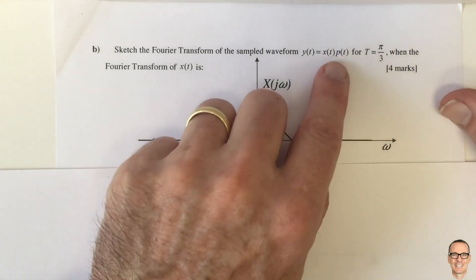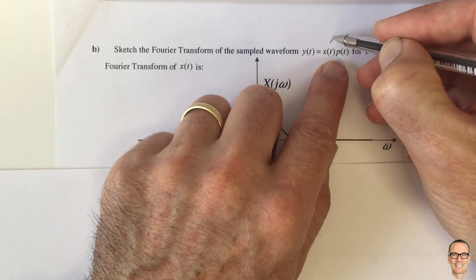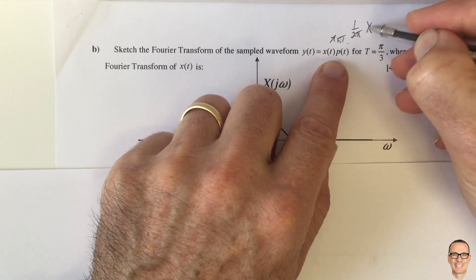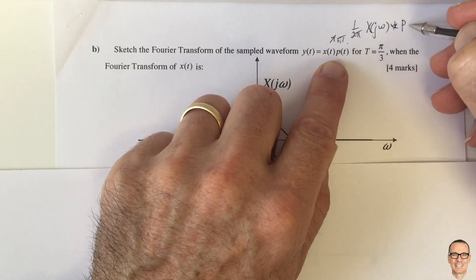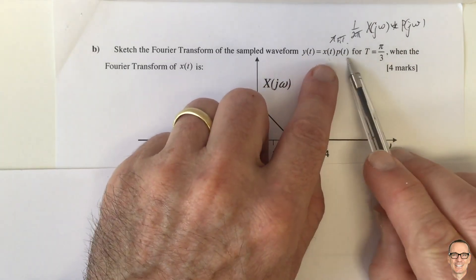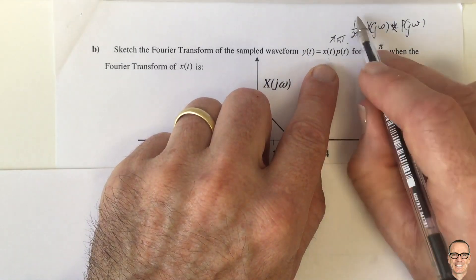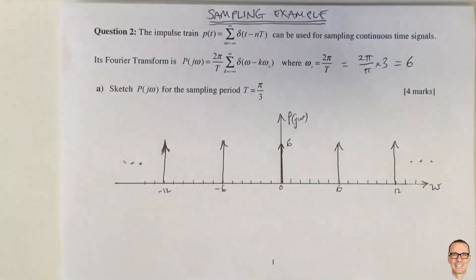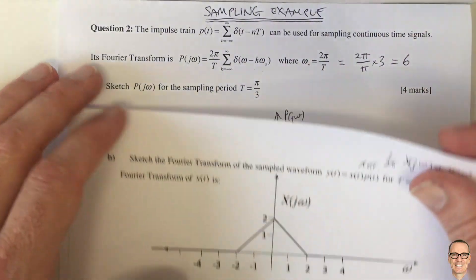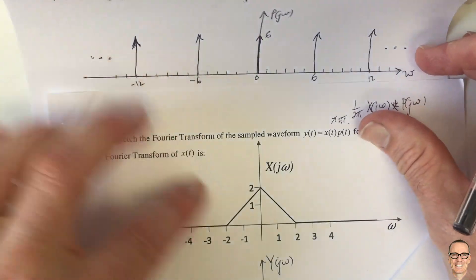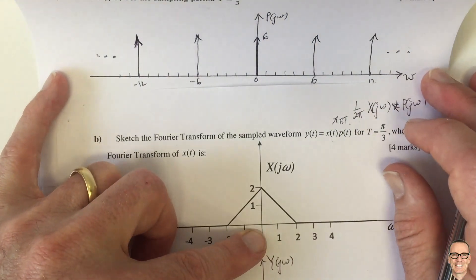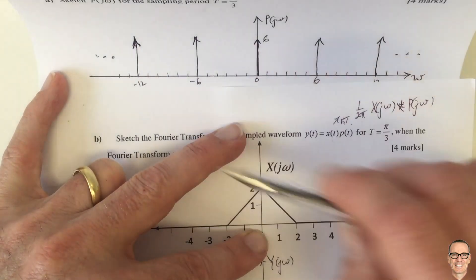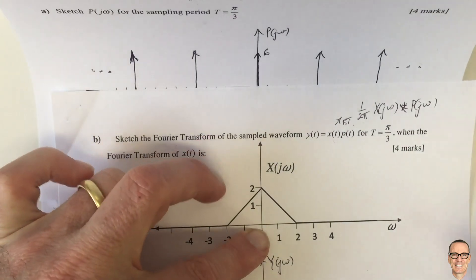Since we have multiplication in the time domain, we know this is equivalent in the Fourier transform to (1/2π) times the convolution of X(jω) with the Fourier transform of our sampling function. So multiplication in the time domain corresponds to convolution in the frequency domain, with a scaling of 1/2π. We now need to convolve the sampling function we derived earlier with our signal X(jω). From the property of convolution with a delta function, the function itself will appear centered on each of the delta functions.